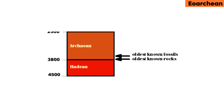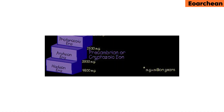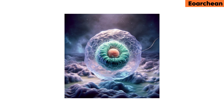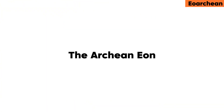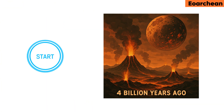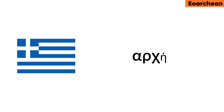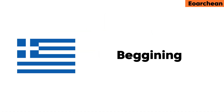The Archean Eon is the earlier of the two formal divisions of Precambrian time, spanning about 4.6 billion to 541 million years ago, and is the period when life first formed on Earth. The Archean Eon began about 4 billion years ago with the formation of Earth's crust and is named after the Greek word for beginning.